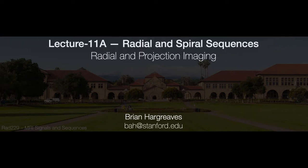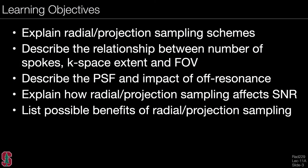The 11th lecture on radial and spiral sequences is divided into two parts. Lecture 11a covers radial and projection imaging. The learning objectives are to explain radial and projection sampling schemes, to describe the relationship between the number of spokes, k-space extent, and field of view, to describe the point spread function and the impact of off-resonance, to explain how radial and projection sampling affects SNR, and to list possible benefits of radial and projection sampling.